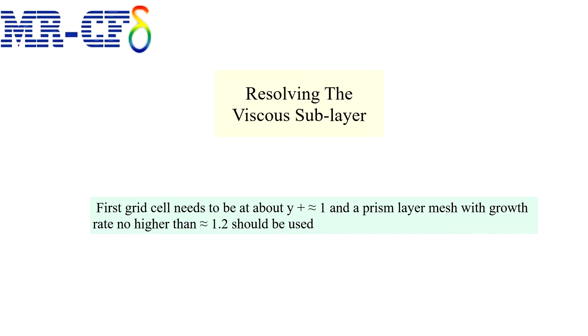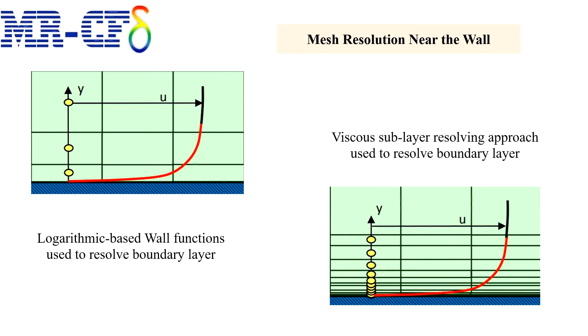And the recommended turbulence model for most cases is SST k-Omega. Fewer nodes are needed normal to the wall when logarithmic based wall functions are used compared to resolving the viscous sublayer with the mesh.